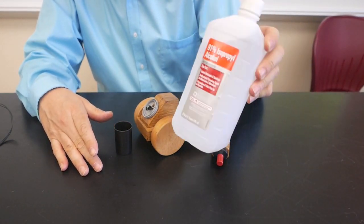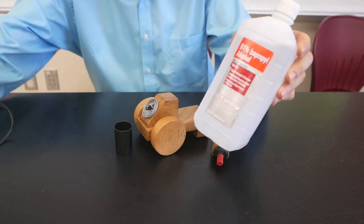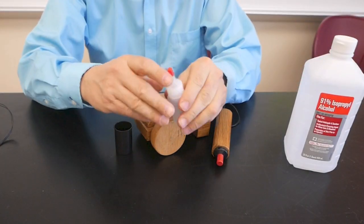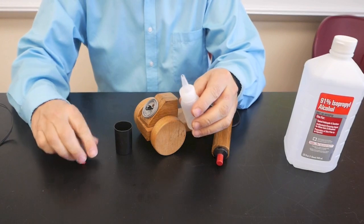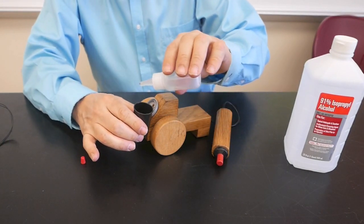Now my fuel for this is isopropyl alcohol about 91 percent. I like to put it in a small dropper just to make it easier to put it into the container. Just two drops.